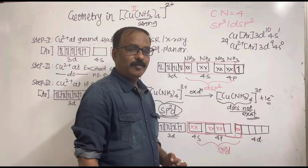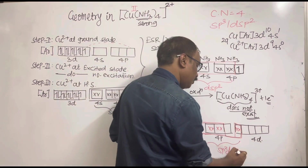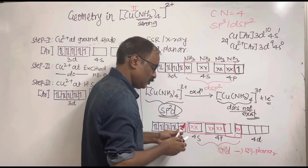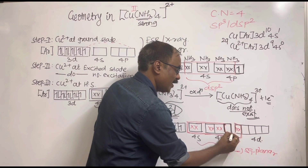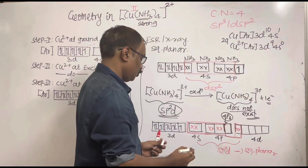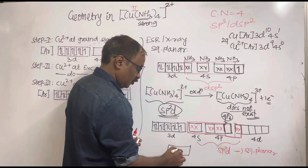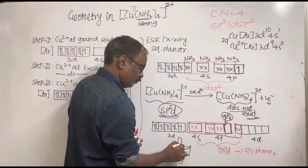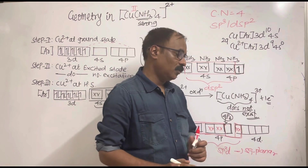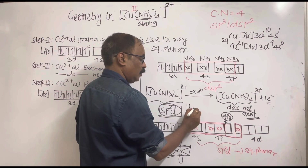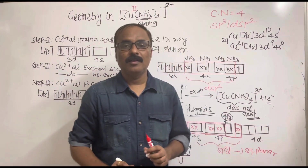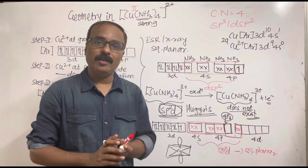When hybridization is sp²d, the geometry is square planar. Note that the 4pz orbital remains in an unhybridized state because 4pz is present above and below the plane, and our geometry is square planar. So the final conclusion is: the hybridization of tetraamine copper(II) is sp²d and the geometry is square planar — this is Huggins' suggestion.